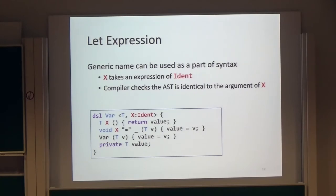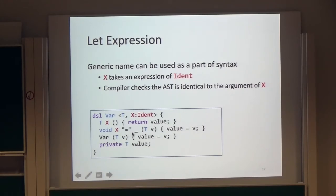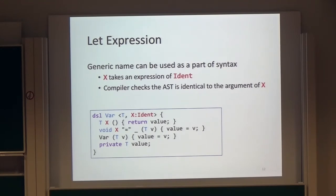Similarly, we can rewrite the DSL class definition using a generic name. This DSL class Bar takes the generic name X as a type parameter. Instance operators X and X equal underscore use the generic name X as part of syntax. A part of syntax X takes an expression of ident — because X has type ident. The compiler checks whether the expression for X is identical to the type argument given to Bar, checking just the AST of the generic name, not the value of the expression.